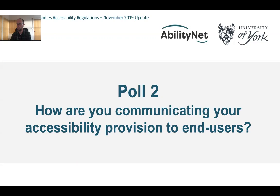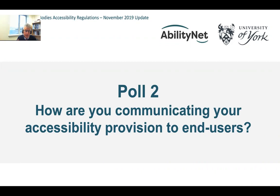The results: the highest percentage — 31% — have an institutional statement, but there's a spread. 23% have statements for all key web systems, and the lowest percentage have statements on departmental or school provision. It's very heartening to see some institutions investing in statements for all key web systems, which provides the utmost transparency. The challenge around that though is keeping these updated and relevant to end users.